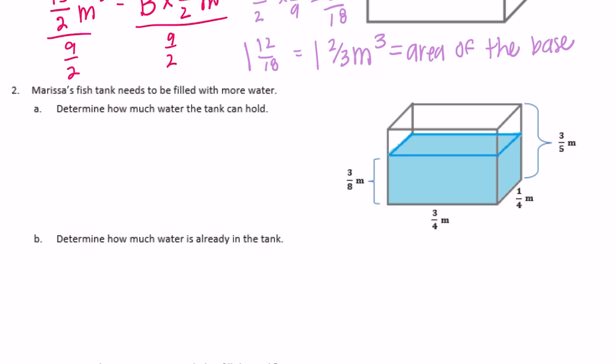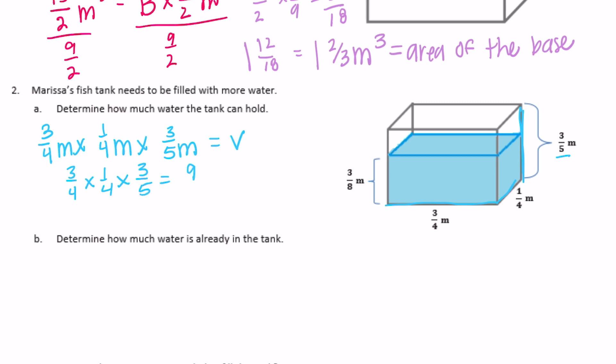Number 2: Marissa's fish tank needs to be filled with more water. Determine how much water the tank can hold — we want the volume of the whole rectangular prism. The length is 3/4 meters, the width is 1/4 meter, and the height of the whole thing is 3/5 meters. 3/4 times 1/4 times 3/5 equals 9 over 80 meters cubed — that's how much the whole tank can hold.